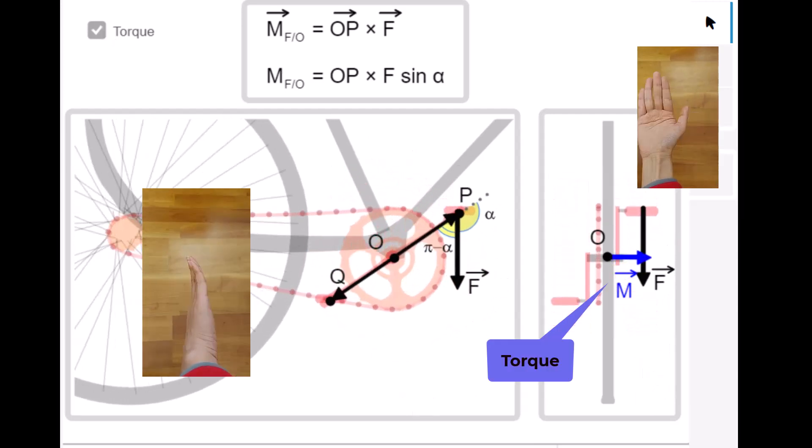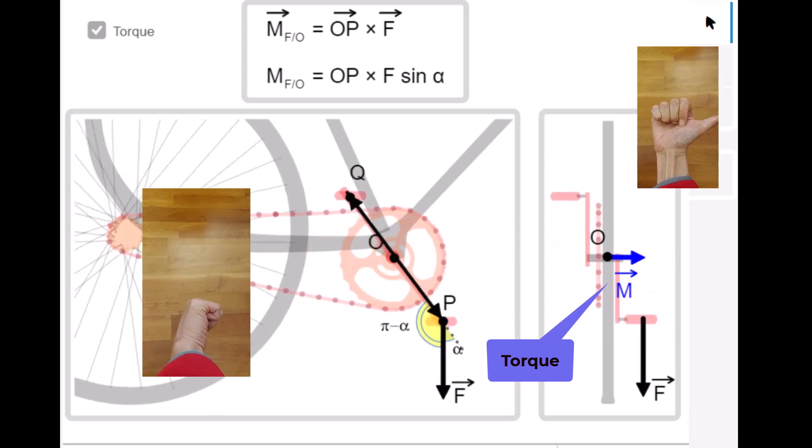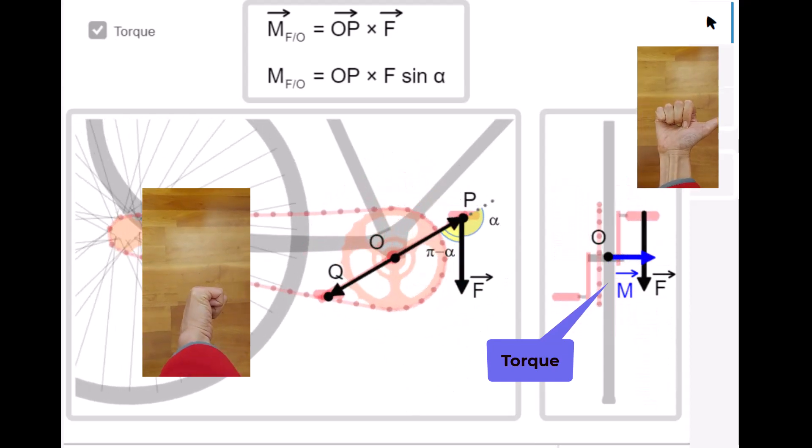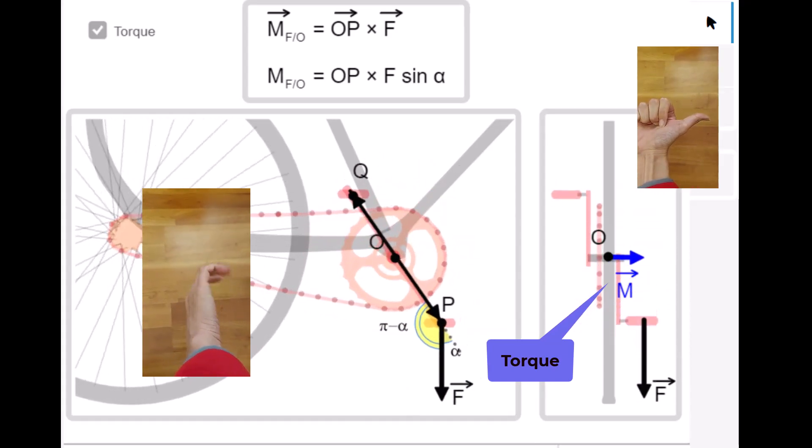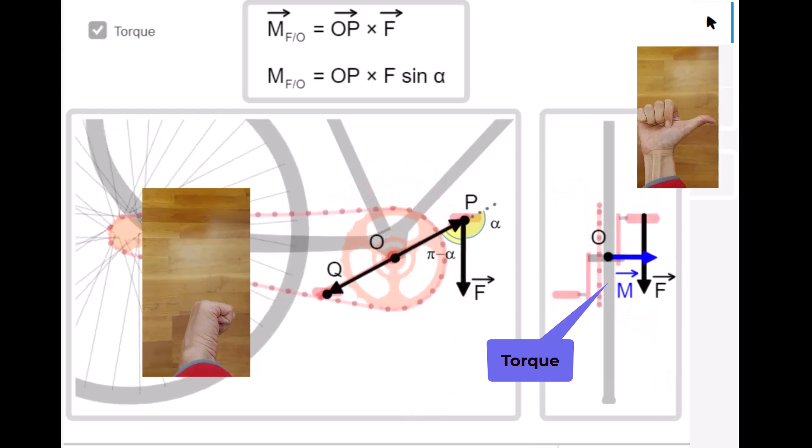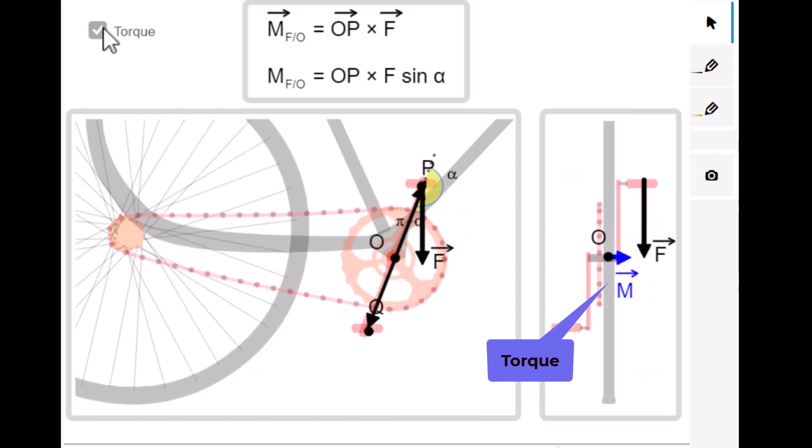We call the change of angular momentum torque. We see in the simulation the torque is into the page when viewed from the side of the bike, or to the right when viewed from the front side of the bike, as shown by the blue arrow.